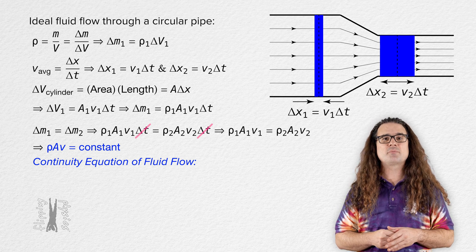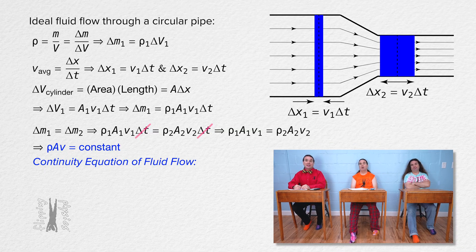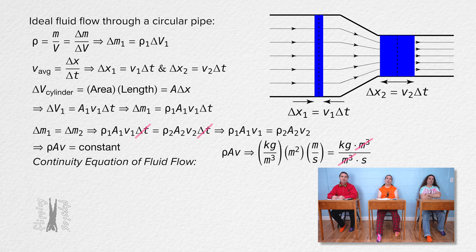Please determine the units for this equation. The units for density are kilograms per meter cubed, the units for cross-sectional area are meters squared, and the units for velocity are meters per second. The meter-cubed terms cancel out, so it works out to be kilograms per second.